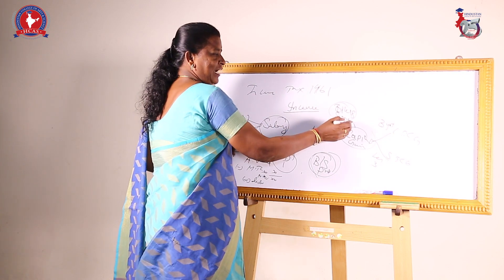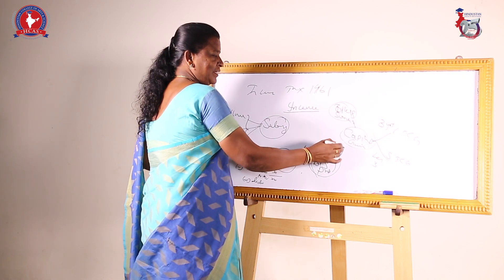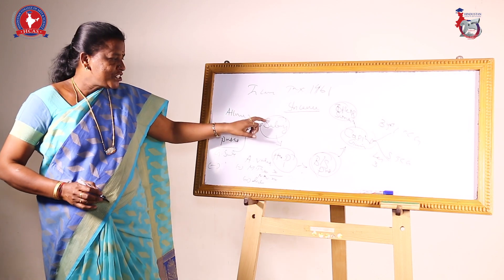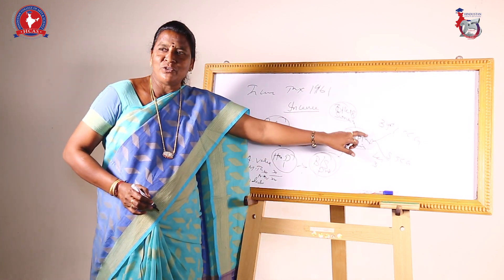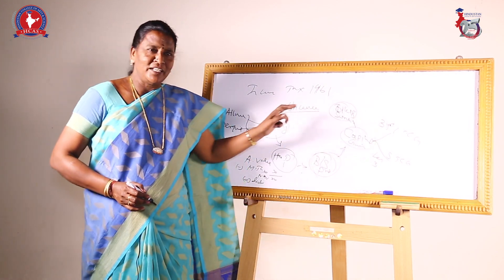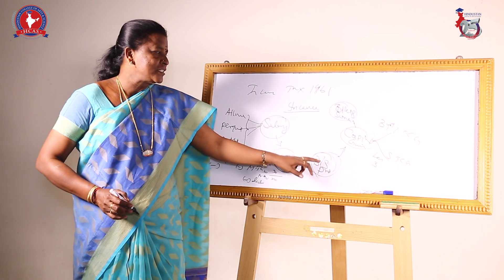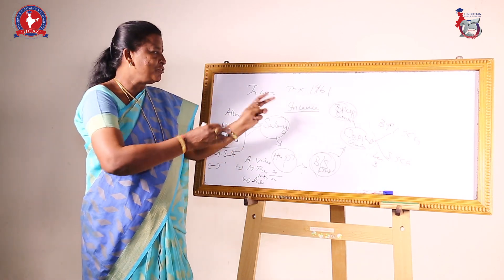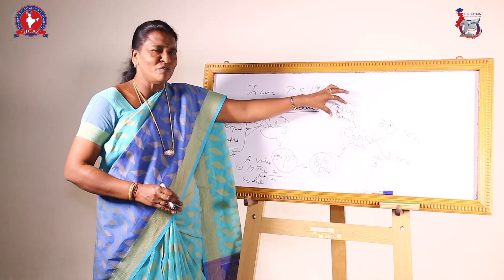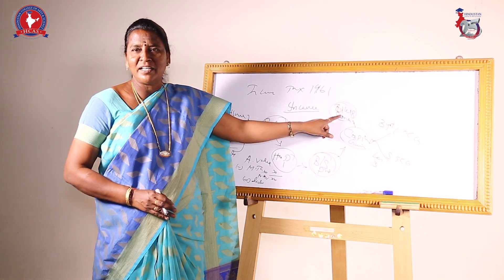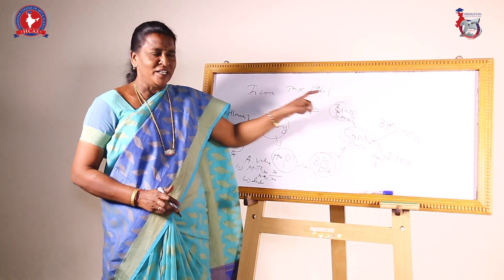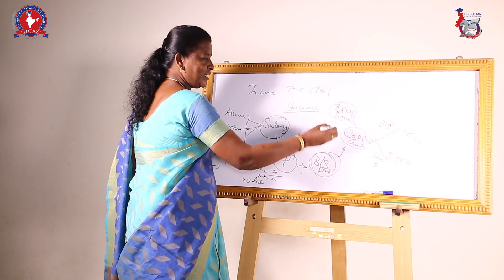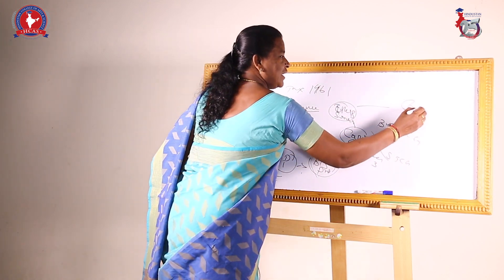The fifth head of income is income from other sources. Any income that does not come under the four categories — salary, house property income, business income, or capital gain — will fall under income from other sources.